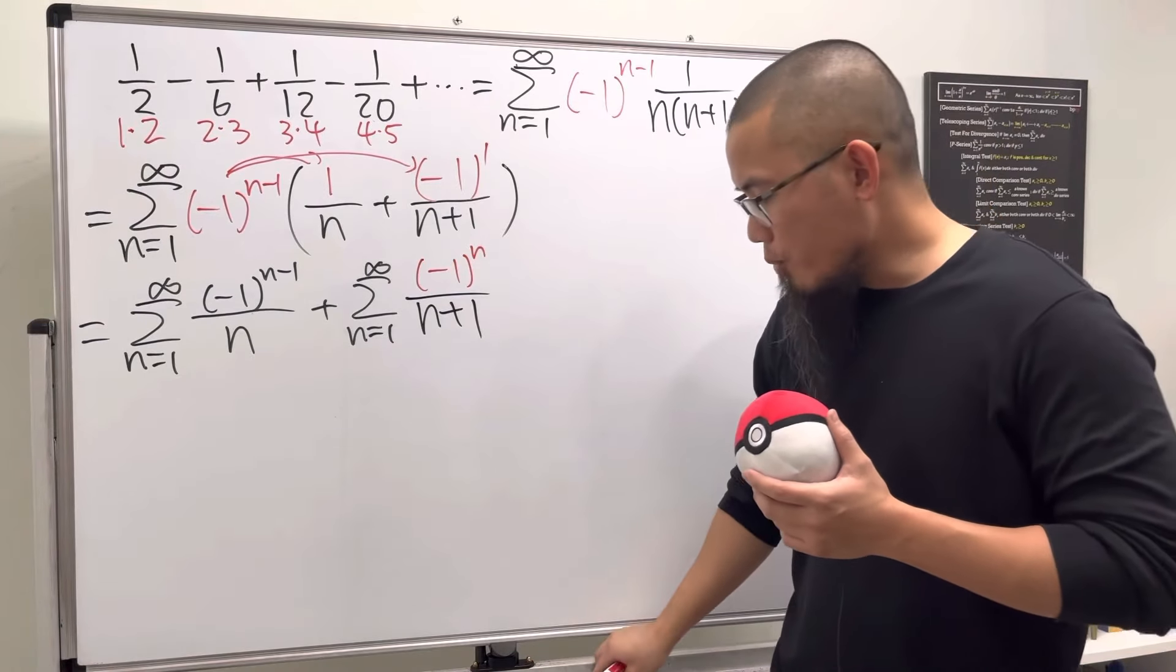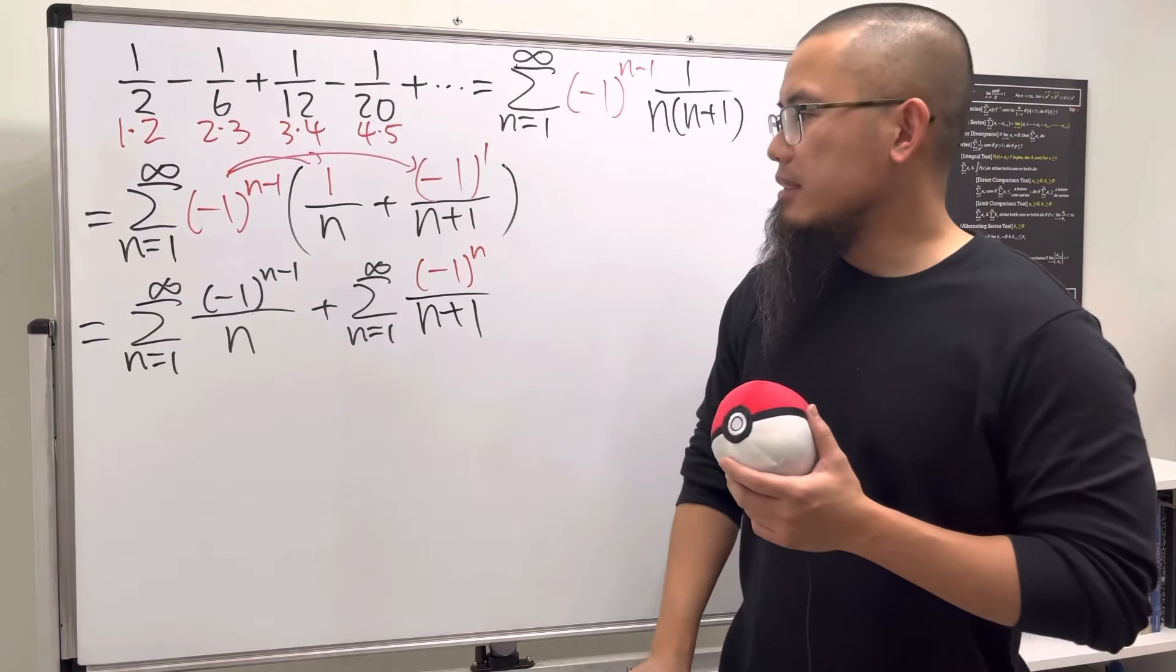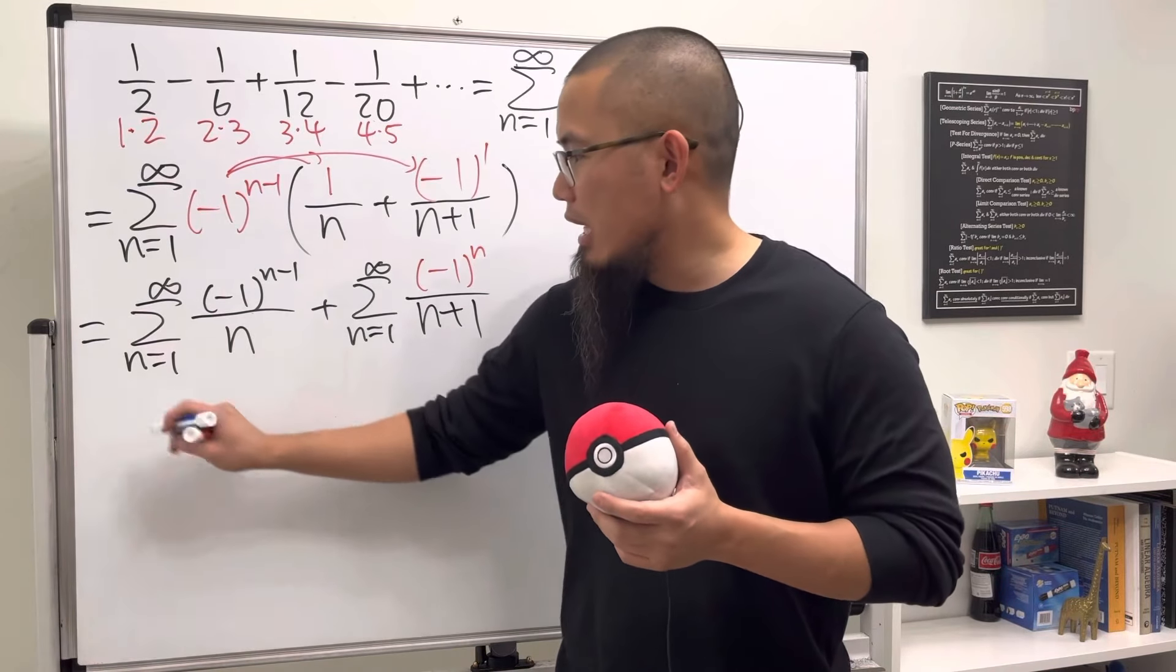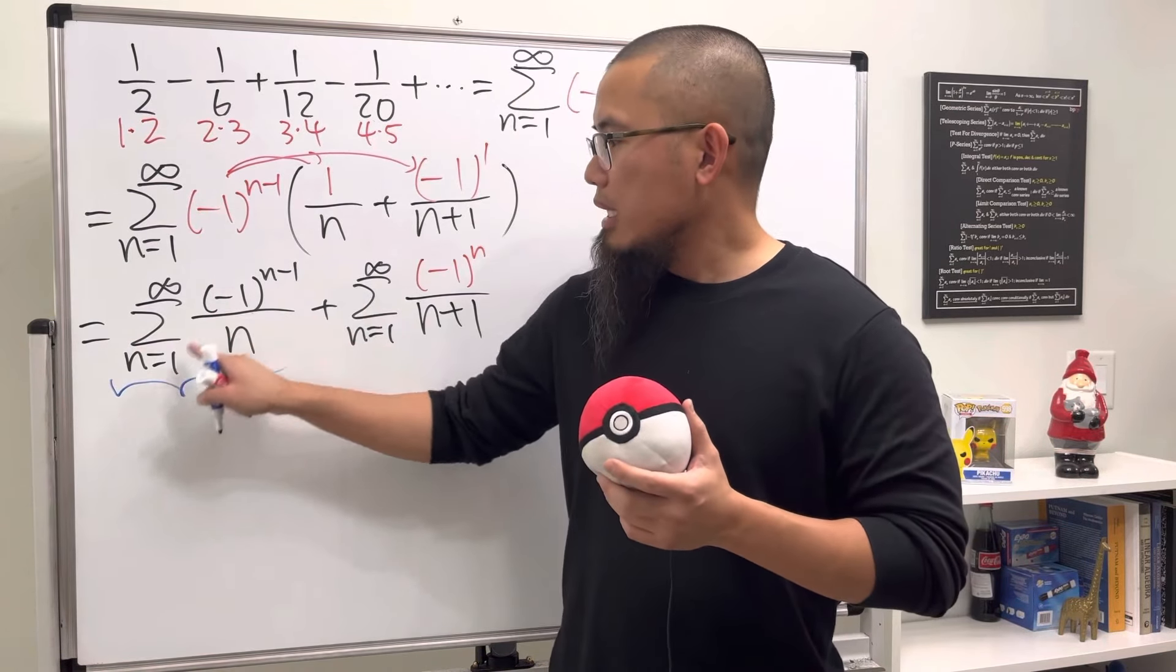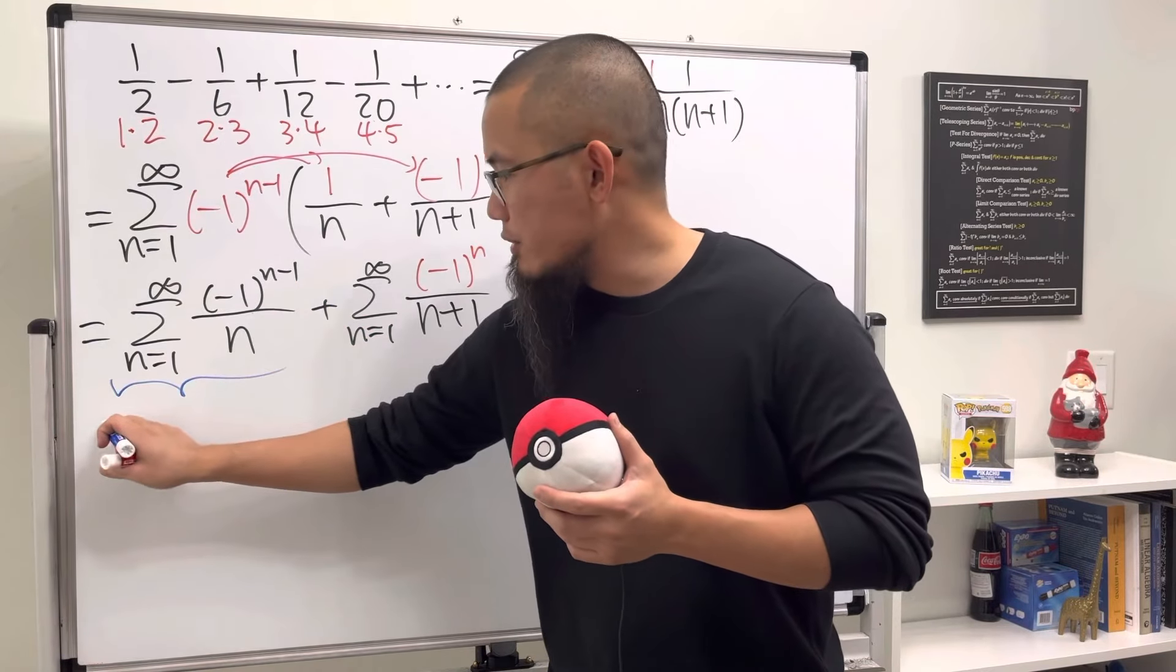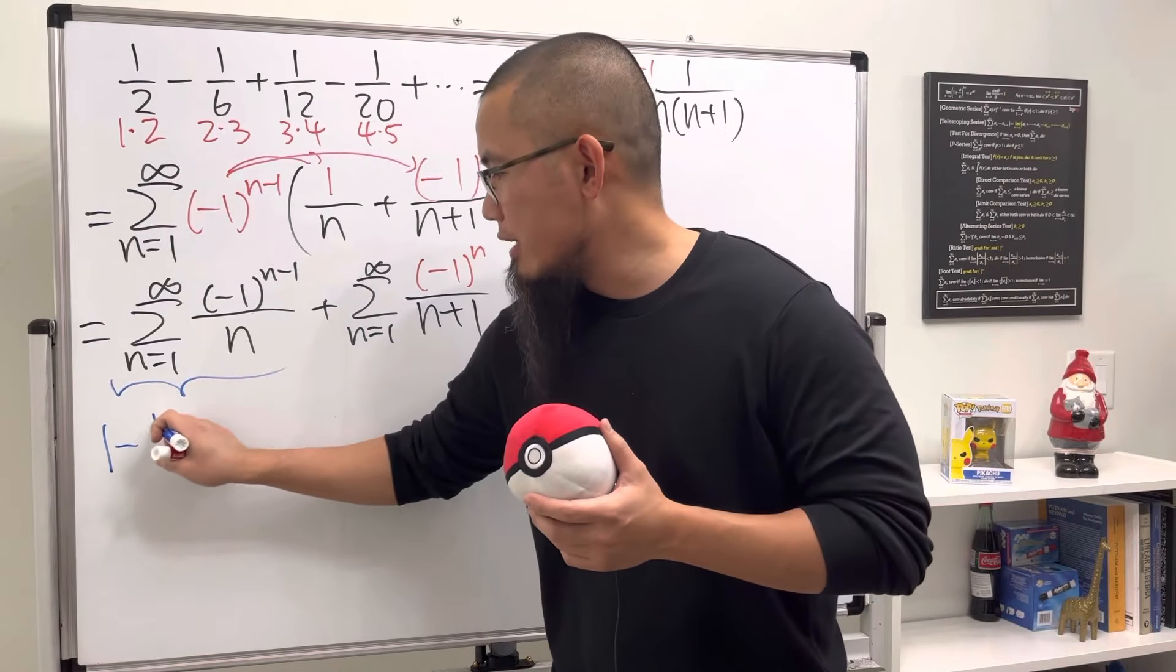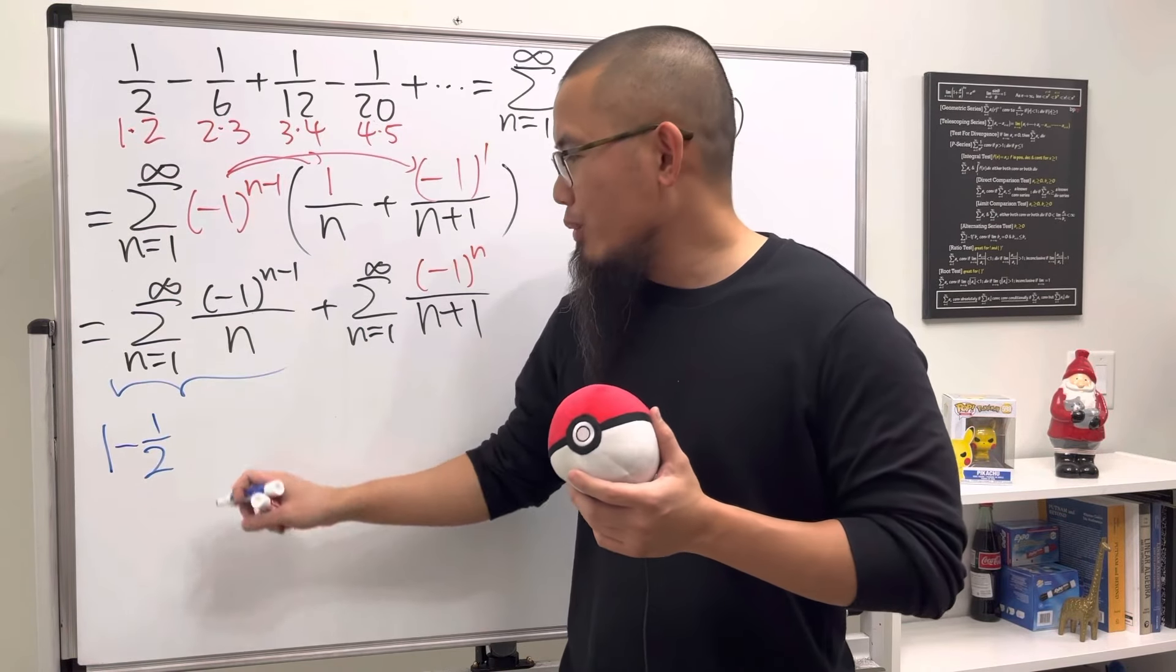I think it's easier if I show you guys the expanded version for this, then you realize what this is. Have a look: plug in 1, we get positive 1/1, that's the first term. Plug in 2, we get -1/2, so we have -1/2. And then continue: next one is going to be +1/3, next one -1/4, and so on.